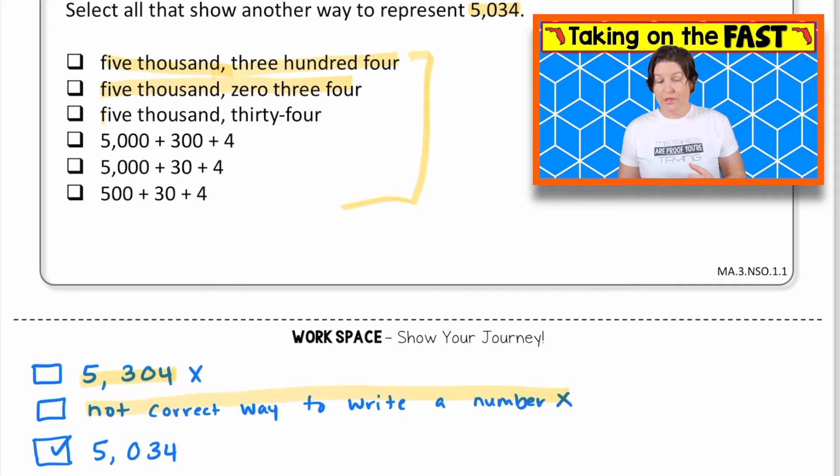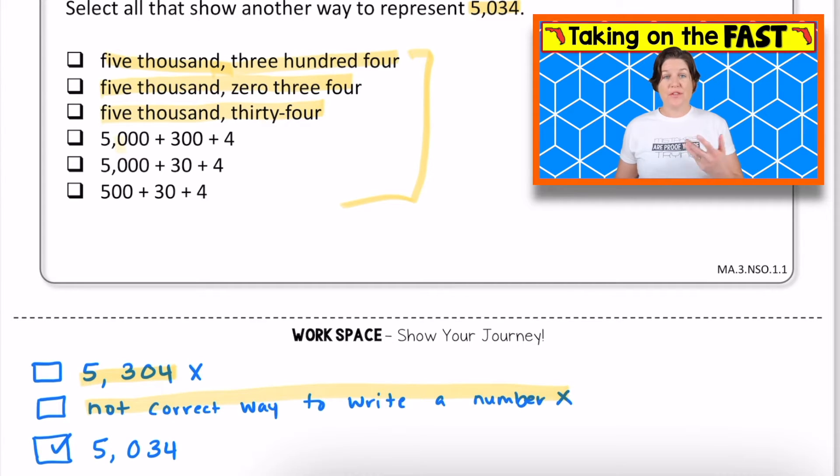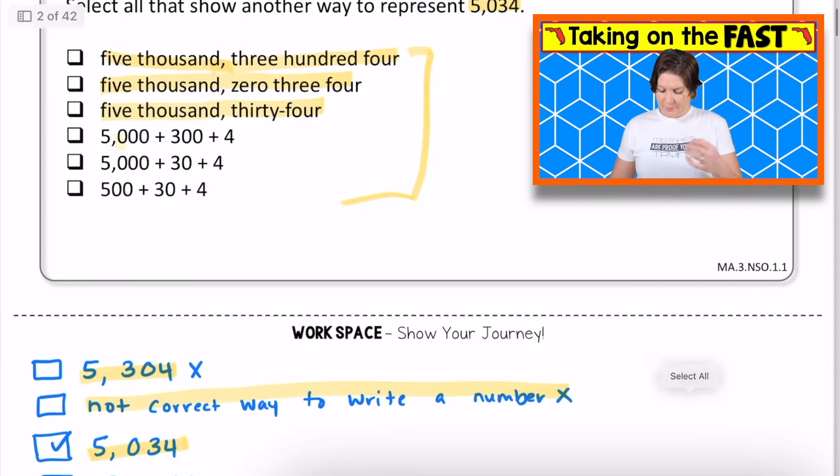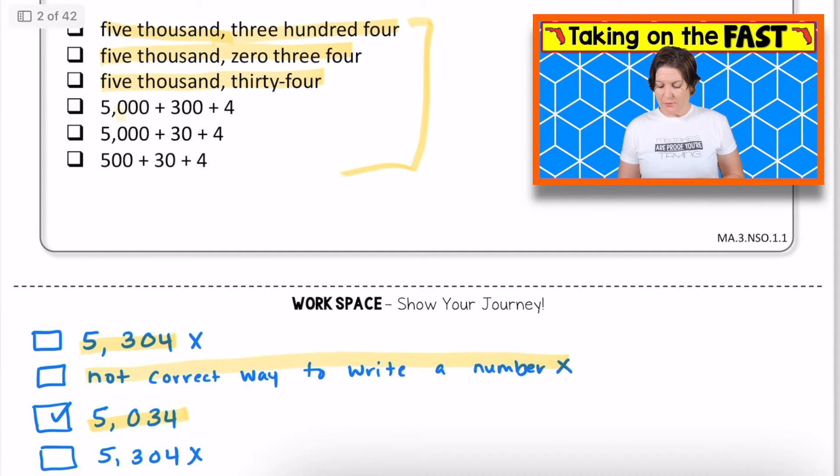Now we have 5,034. That is definitely one that we want. So you can see 5,034, that is an answer that I will select at the end. The next one is 5,000 plus 300 plus 4. When you compose that expanded form back into standard form, we get 5,304. That is not correct. So we can eliminate that one.